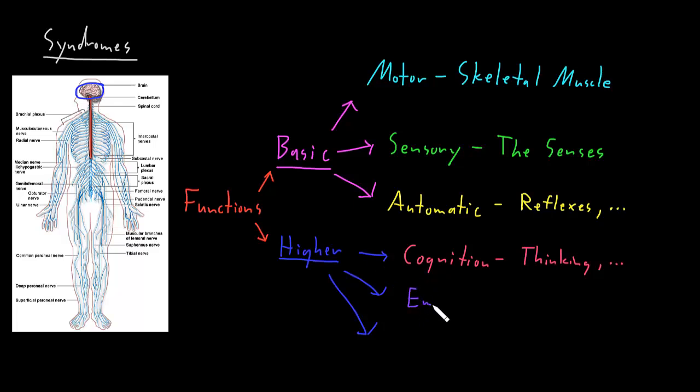The next big category of higher functions of the nervous system I call emotions. And emotions, of course, are our feelings. But it turns out there's a lot more to emotions than just kind of what we feel, because emotions play a major role in our experience of life and a lot of other functions of both the nervous system and the rest of the body.